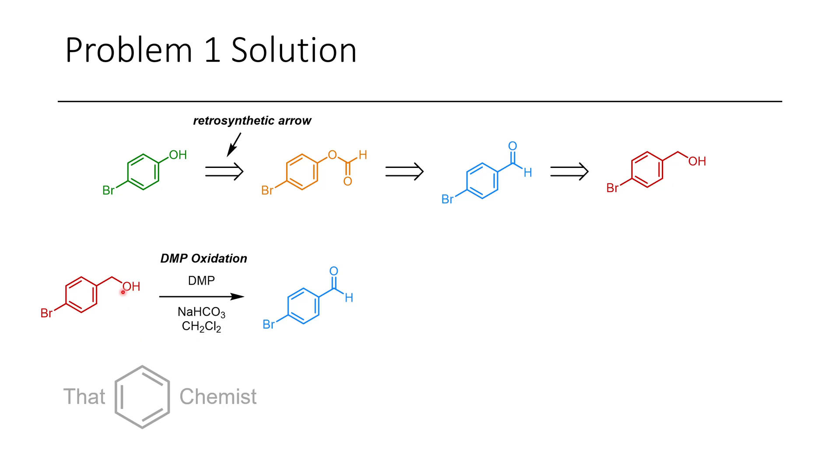In the forward direction, first we would take this benzyl alcohol and do a DMP oxidation. This would give you the benzaldehyde. You could then treat this benzaldehyde with MCPBA and do a Baeyer-Villiger oxidation giving you this formate ester. And finally a hydrolysis reaction affording the phenol.